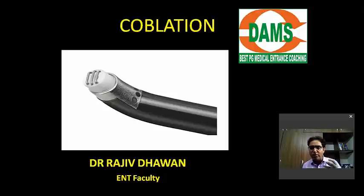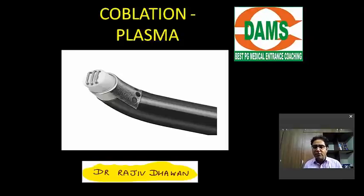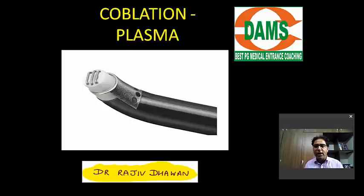The usual monopolar electrocautery, when the current passes through the tissue, there is a lot of collateral damage as well. In coblation, we pass the radio frequency through the normal cell line and that normal cell line gets activated, charged up, and that charged-up normal cell line is called plasma.